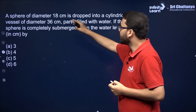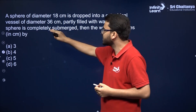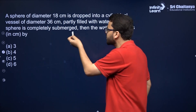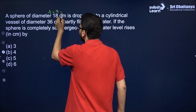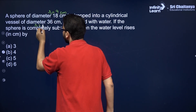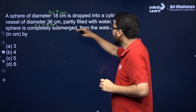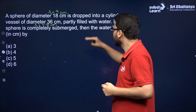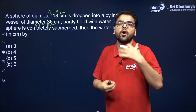A sphere of diameter 18 cm is dropped into a cylindrical vessel of diameter 36 cm. Whenever you get diameters, just change them to radii. So the radius of the sphere will be 9 cm — let's call it r1 — and the radius of the cylinder will be 18 cm. Partly filled with water. If the sphere is completely submerged, then the water level rises by — so we need to find the rise in the water level.